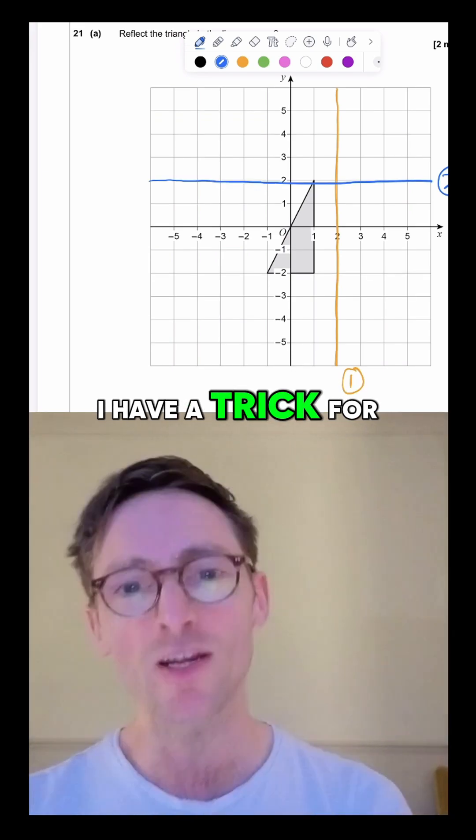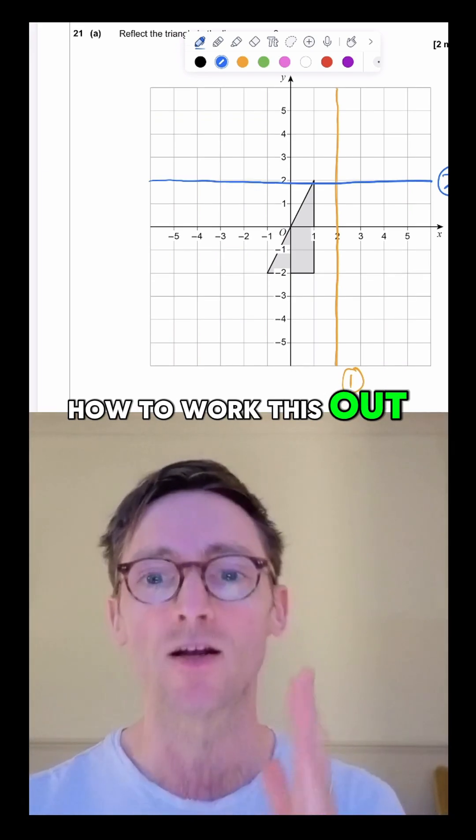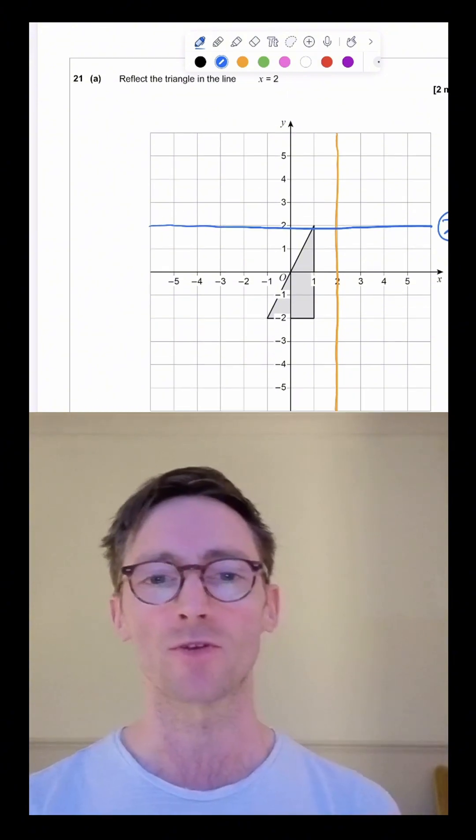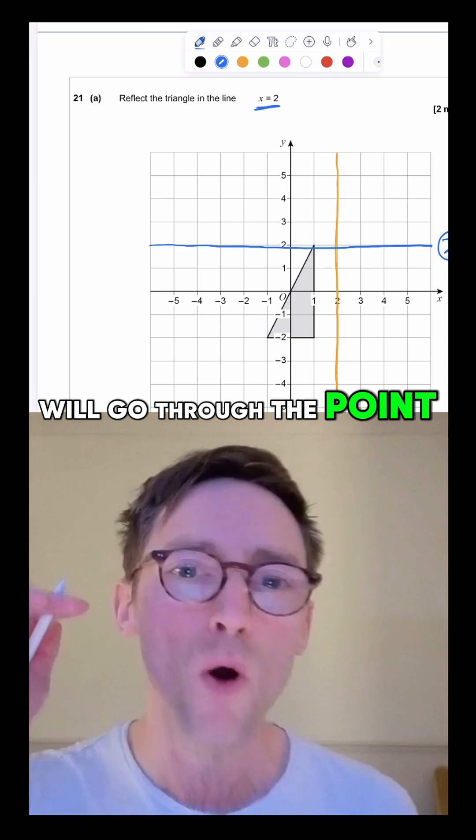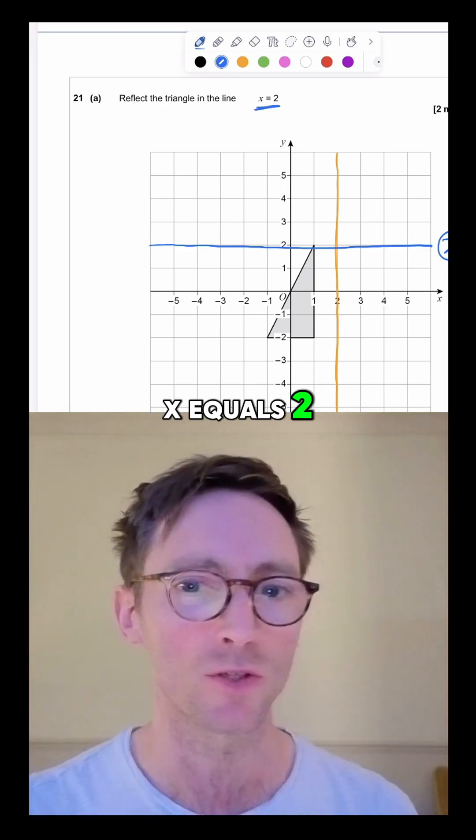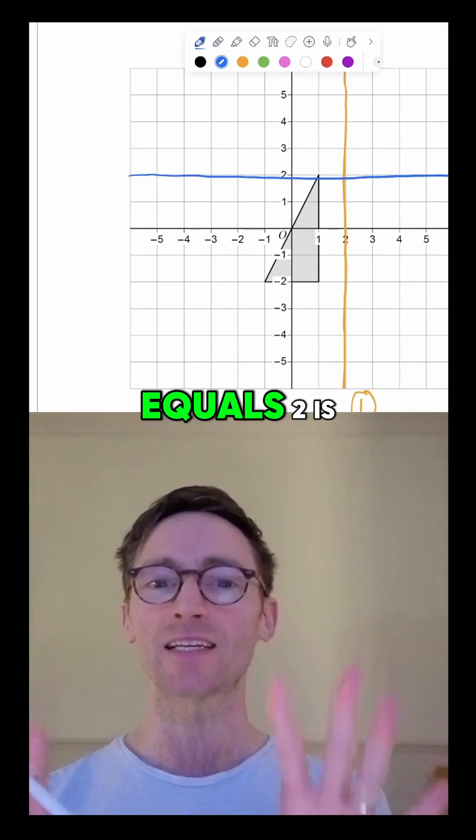Okay, I have a trick for how to work this out. What you have to do is ask yourself: the line x equals 2 will go through the point x equals 2. Go and find where x equals 2 is.